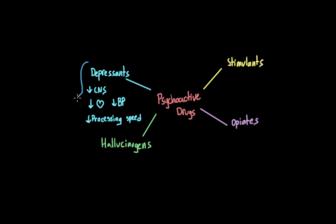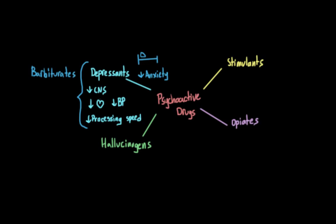There are a number of different types of drugs that fall under this heading. One type is referred to as barbiturates, also sometimes called tranquilizers. These are drugs sometimes prescribed to help people sleep or calm down, and are also used in general anesthesia or as an anticonvulsant. However, these drugs aren't actually prescribed very often because of their side effects and high addiction potential.